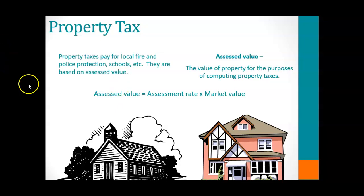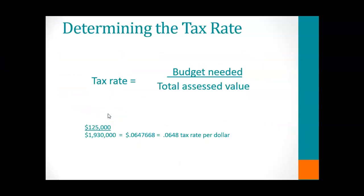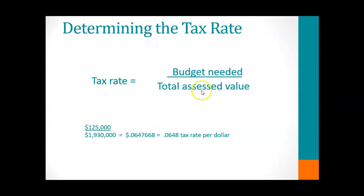The actual tax rate charged by a municipality is based upon its budget needs. They take the budget need divided by the total assessed value of all properties in that county or municipality to determine the overall tax rate. For example, if a small county has a budget need of $125,000 and a total assessed property value of $1,093,000, then the tax rate per dollar is 0.0648, which is roughly 6.48%.